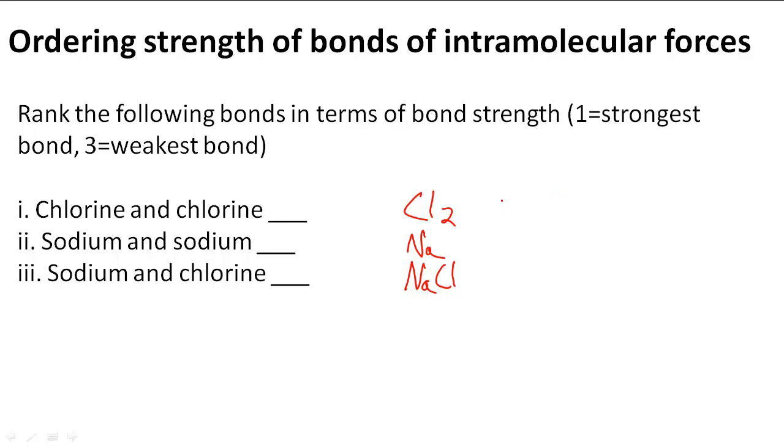So Cl2 is actually a nonpolar covalent bond. They're two nonmetals. They have the same electronegativity. So that means they can share electrons equally. And so that means none of them have a dipole moment. So it's a nonpolar covalent bond.